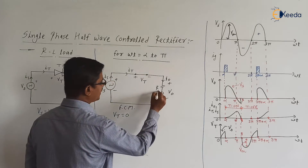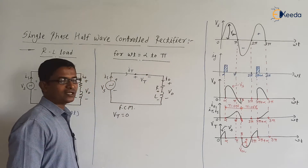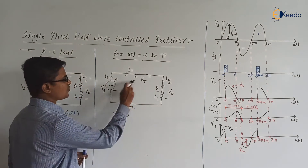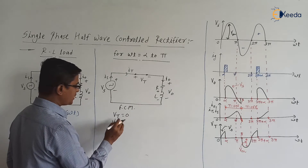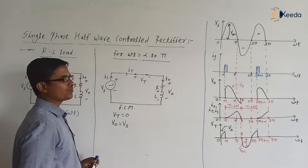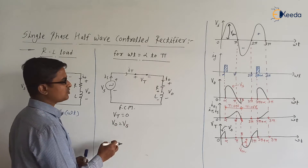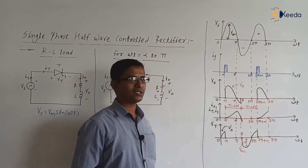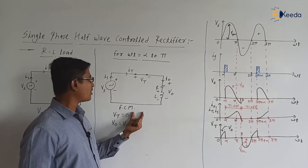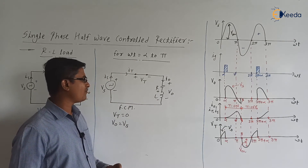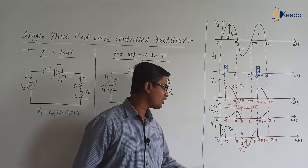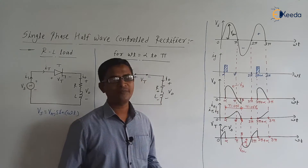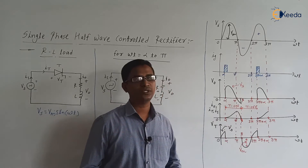From ωt = α to π: V₀ = Vs, Vt = 0 V, and I₀ goes on increasing slowly. At ωt = π, I₀ value is non-zero and positive. Now from ωt = π to β, we are going to discuss what will happen.